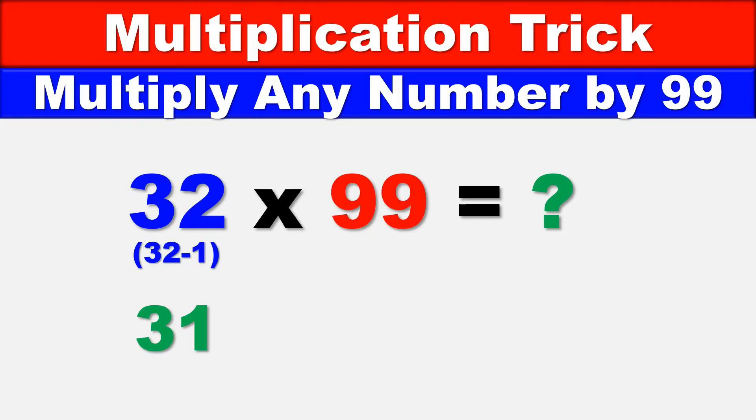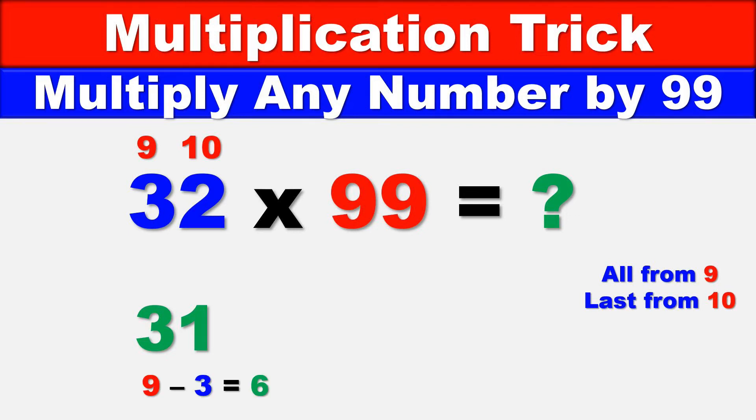The rule is 'all from 9, last from 10,' and this is what we follow for the second part. We subtract each digit from 9 except for the last one, which we subtract from 10. In this case with 32, we start with 9 minus 3...